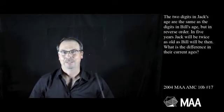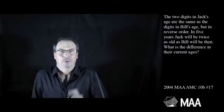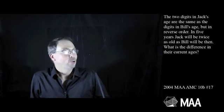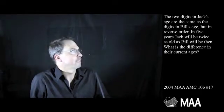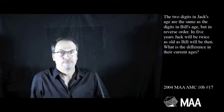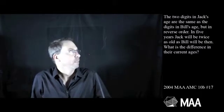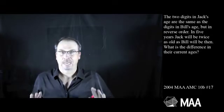G'day, welcome to another Curriculum Burst. Here's a very interesting algebra and number sense type question for high schoolers. It goes as follows: The two digits in Jack's age are the same as the digits of Bill's age, but in reverse order. In five years, Jack will be twice as old as Bill will be then. What is the difference of their current ages?